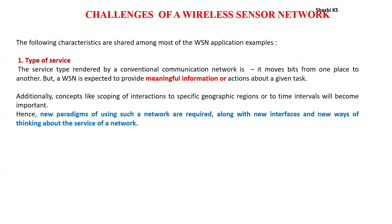The first characteristic is type of service. A conventional communication network moves bits from one place to another, but a wireless sensor network has to provide meaningful information and actions about a given task. Additionally, interactions have to be scoped to specific geographic regions or specific time intervals — for example, for localized or time-related sensors.